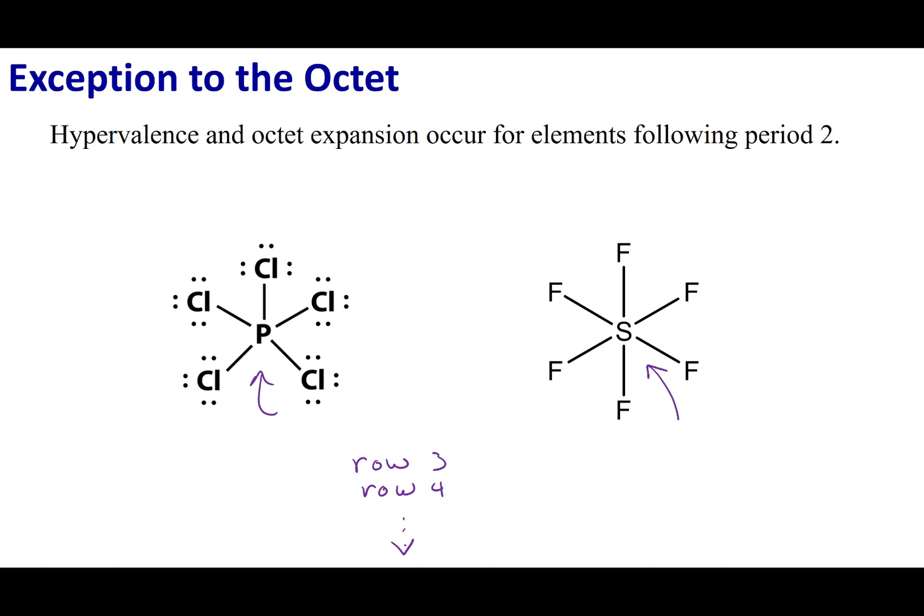You can look at the formal charge of each of these compounds and you'll find they have a zero formal charge across the board. Always remember to obey the octet rule unless you have to break it due to the number of electrons and atoms you have, and that will provide a structure that minimizes formal charge.